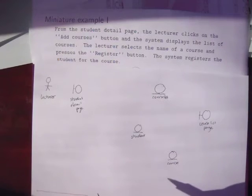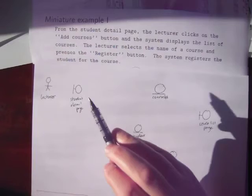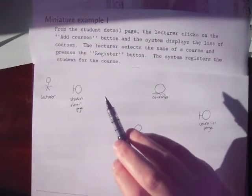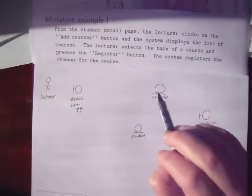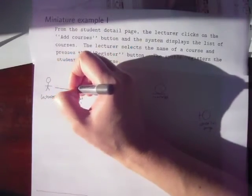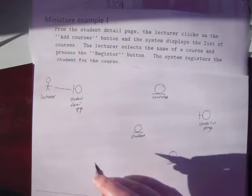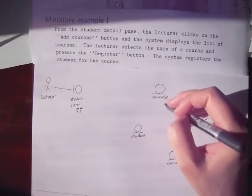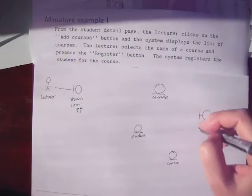We read through the use case text a sentence at a time. From the student detail page, the lecturer clicks on the add courses button and the system displays the list of courses. So we've got the lecturer talking to the student detail page. Remember, actors can only ever talk to boundary objects, not to anything else. And the system needs to display the list of courses. We've got an entity object list of courses and a page to display it on. But these are all nouns.